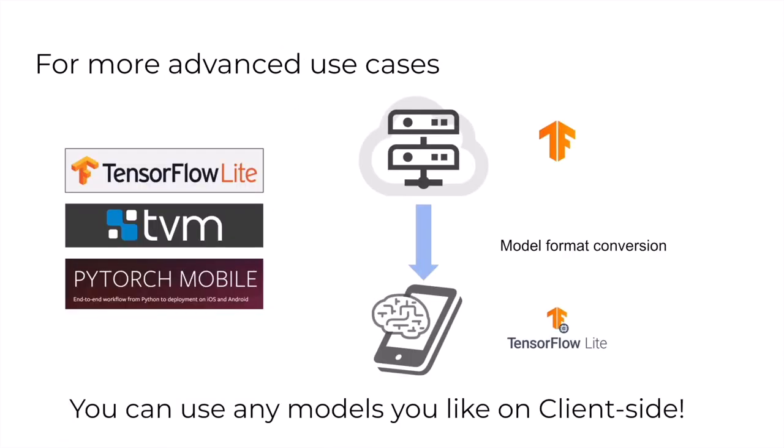When you try more advanced features, you can use more low-level open-source libraries such as TensorFlow Lite, TVM, or PyTorch Mobile. The development steps for any library are similar — you need to train your model on the server and compile it to a specific format for the runtime. These libraries provide both a converter and a runtime. In this way, you can use any models you like on the client-side.